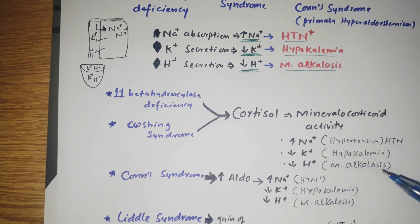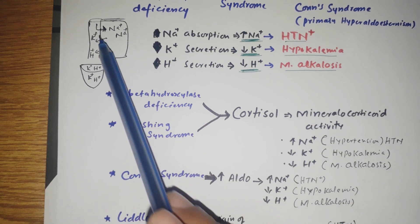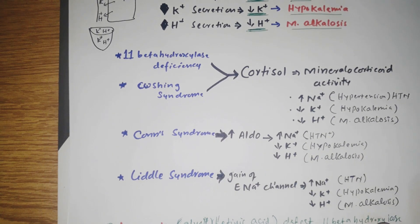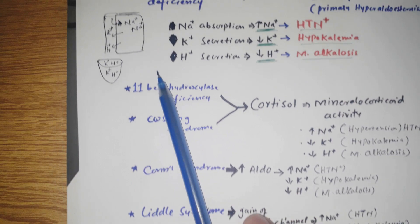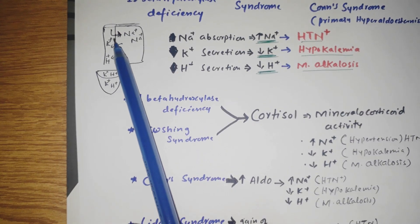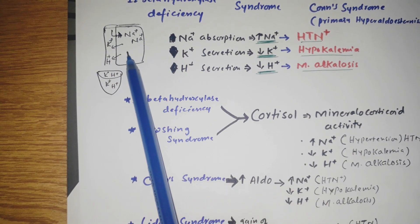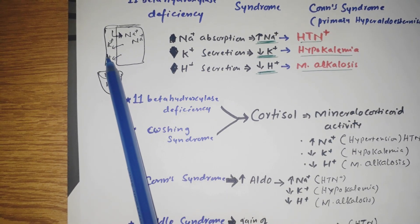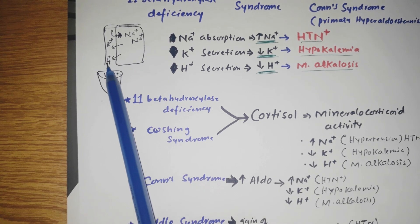Conn syndrome is primary hyperaldosteronism — aldosterone levels increase and act on the collecting duct channel to increase sodium absorption, causing hypertension. It also increases potassium secretion causing hypokalemia, and increases proton secretion causing metabolic alkalosis.